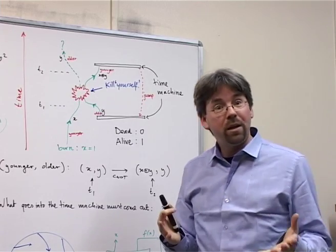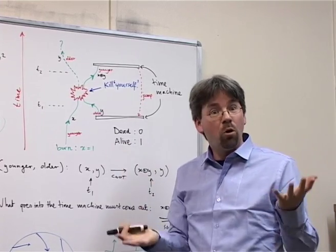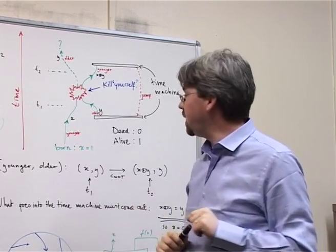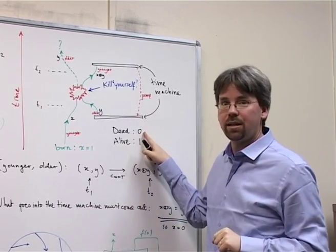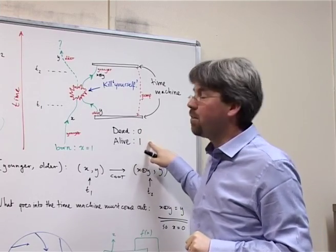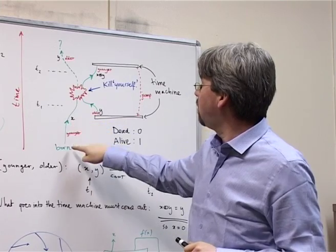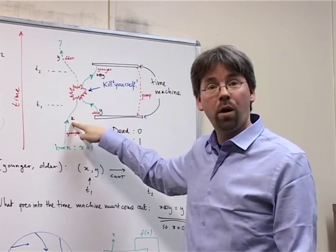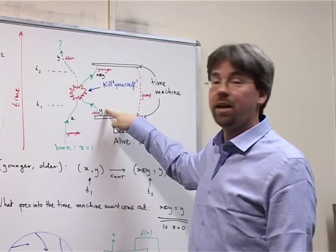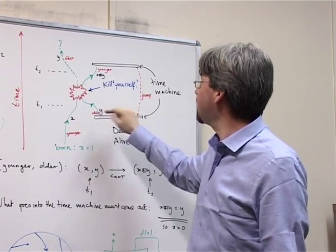And mathematically speaking, we can just say dead or alive. That's all we need. So that's just one bit of information. So let's say 0 is dead and 1 is alive. Then we can say that my younger self has a bit value x and my older self has a bit value y.